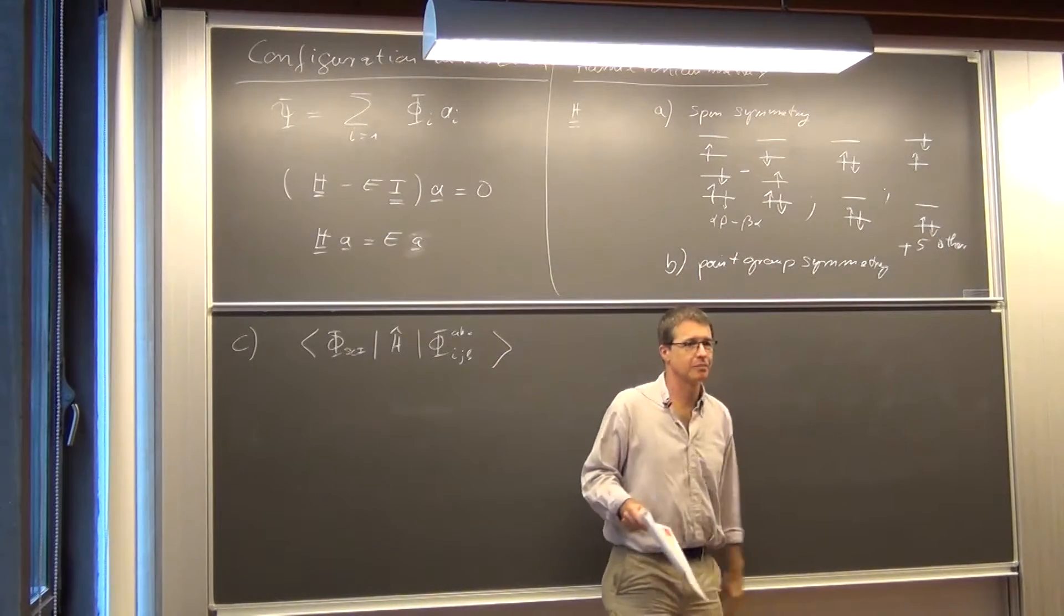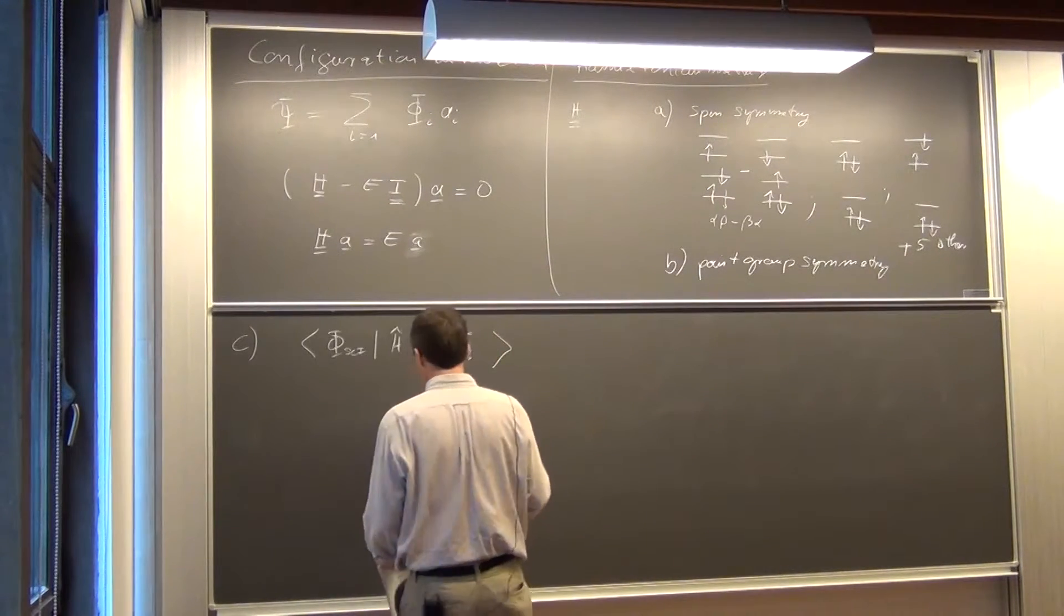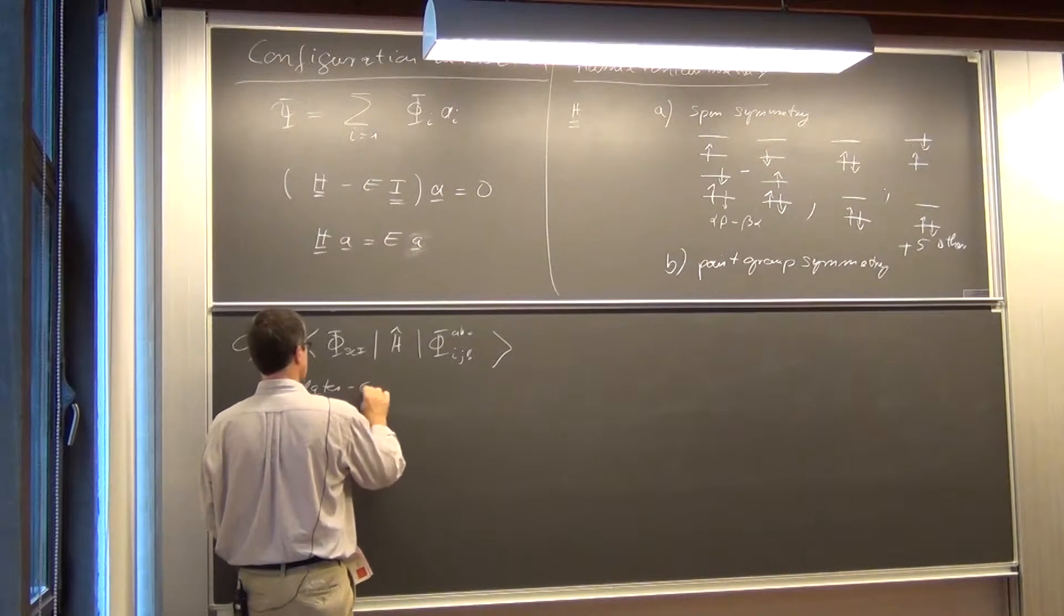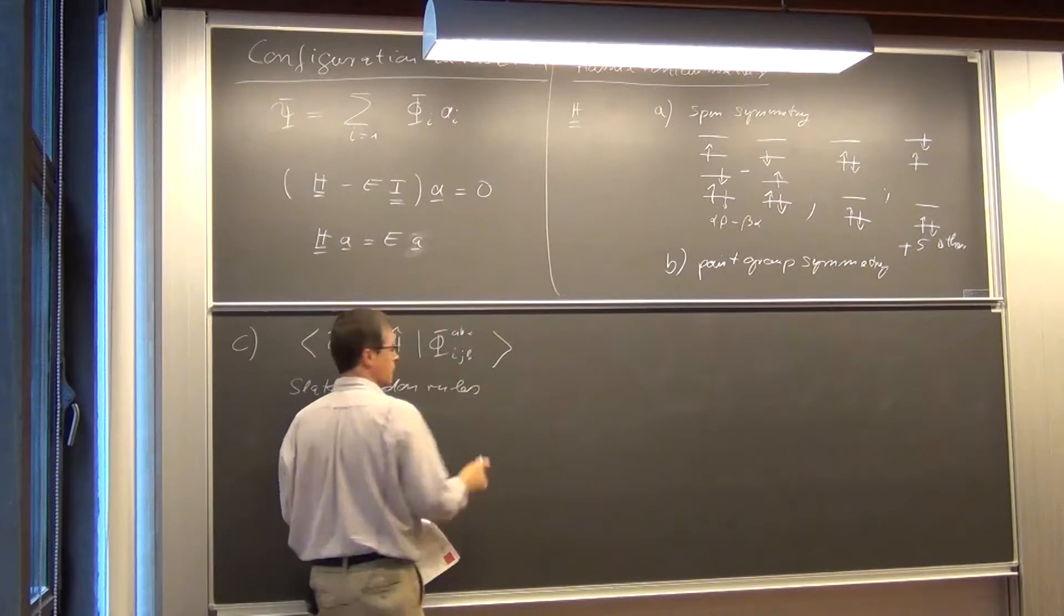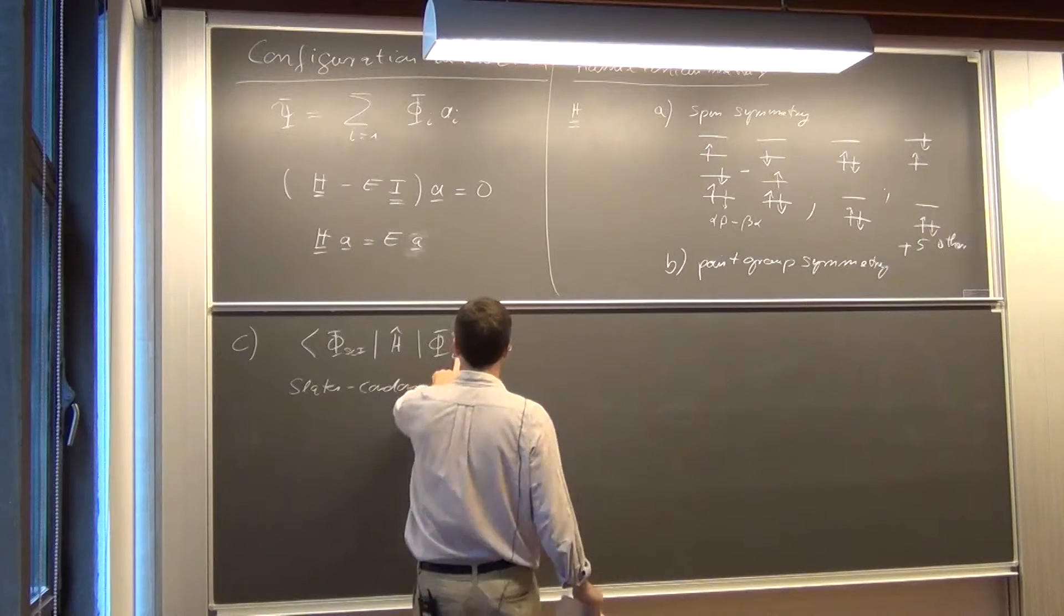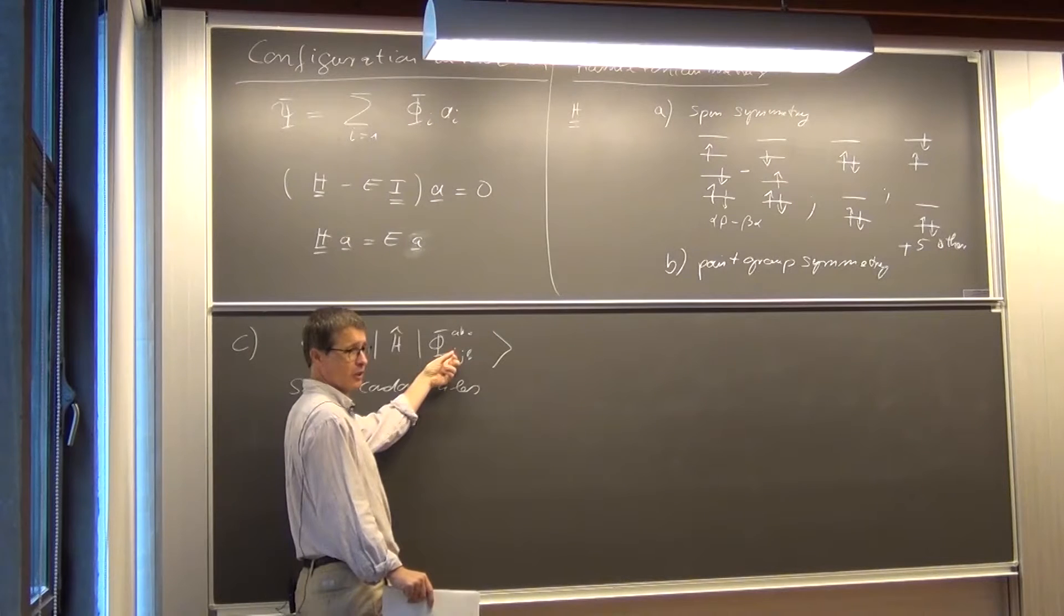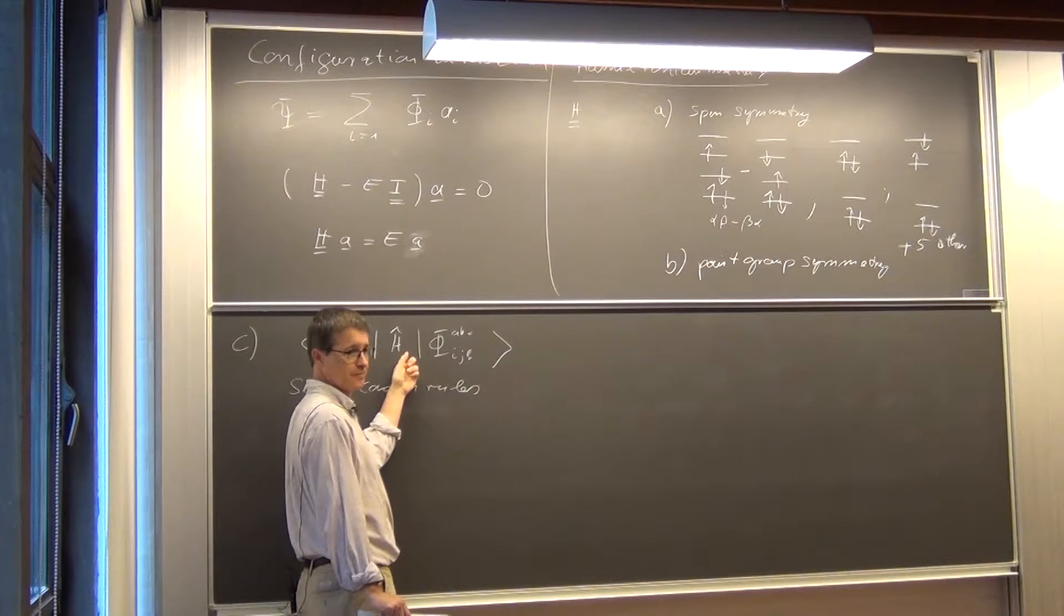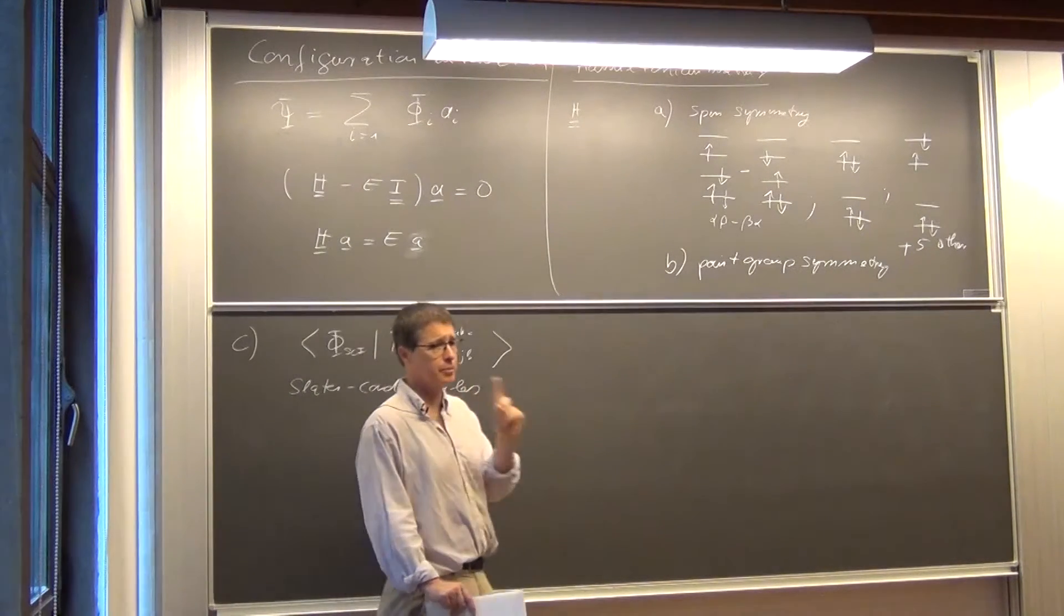And this matrix element is not zero because of spin symmetry. It's also not zero because of point group symmetry. Then there are some rules called Slater-Condon rules, which tell you in how many orbitals the two determinants are allowed to differ in order for that matrix element to be different from zero.